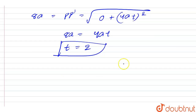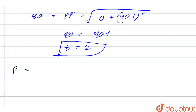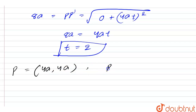Therefore, substituting t = 2: P = (4a, 4a). Similarly, P' = (4a, −4a).